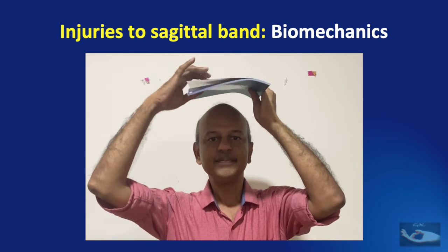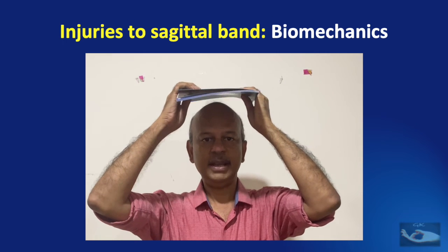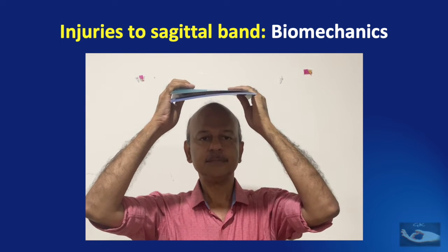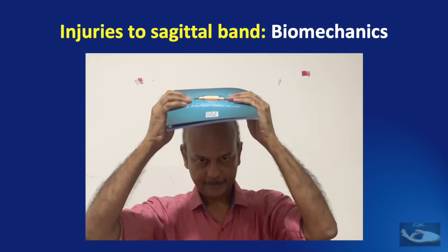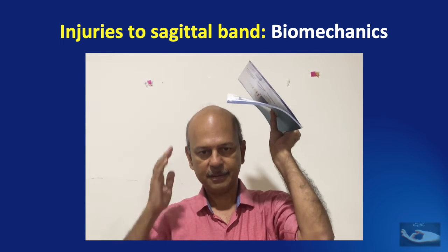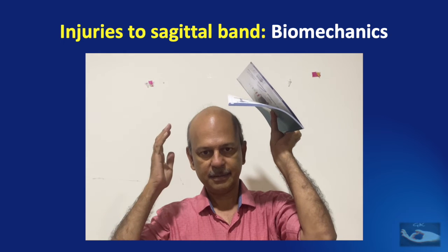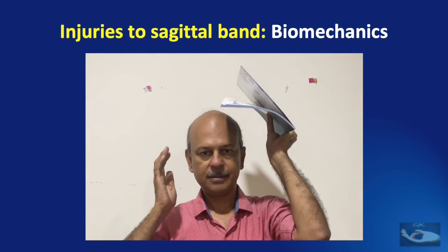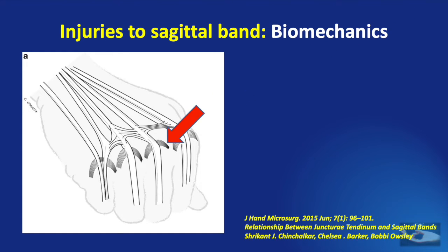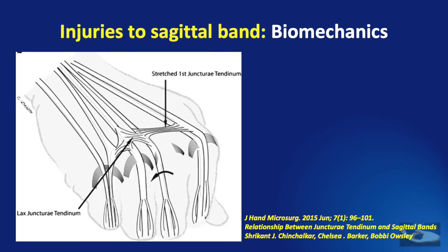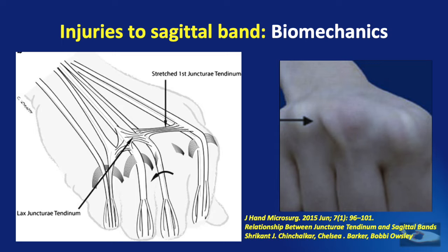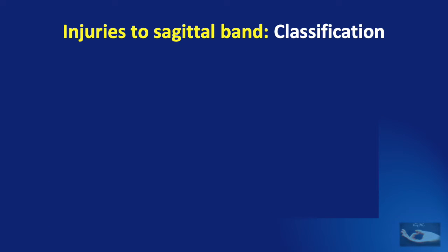To demonstrate: this book represents the extensor tendon on the dorsal aspect of the metacarpophalangeal joint — represented by my head — and my right hand and forearm represent the radial side sagittal band. When this radial side sagittal band is ruptured, the tendon slips towards the ulnar side, as forces tend to pull the extensor tendons towards the ulnar side. So when there is an injury to the radial side sagittal band — for example at the middle finger — the extensor tendon dislocates and falls into the gutter between the middle and ring finger metacarpophalangeal joints.